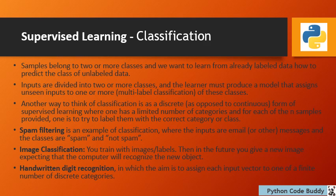In classification, samples belong to two or more classes and we want to learn from already labeled data how to predict the class of unlabeled data. Inputs are divided into two or more classes and the learner must produce a model that assigns unseen inputs to one or more of these classes. Examples include spam email filtering, image classification where you train the model with images and labels so it can recognize new objects, and handwriting digit recognition (OCR) where the aim is to assign each input vector to one of a finite number of discrete categories.